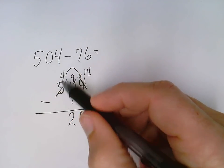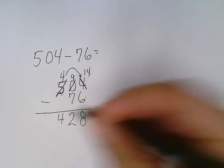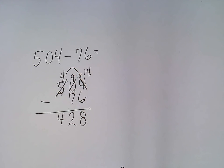And in my last column, 4 minus nothing, I can certainly do. 4 minus nothing is 4. So the answer to 504 minus 76 is 428.